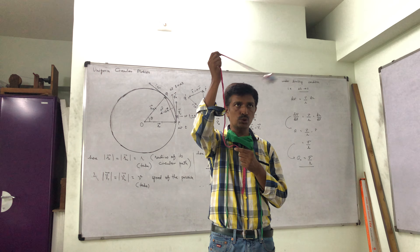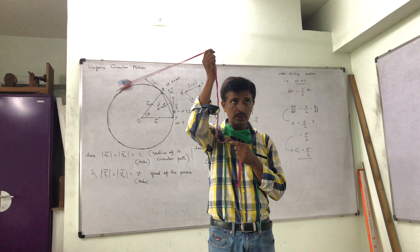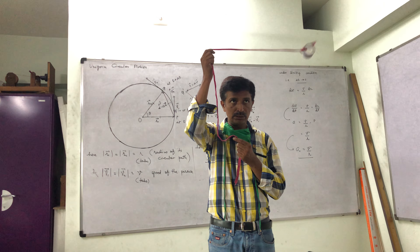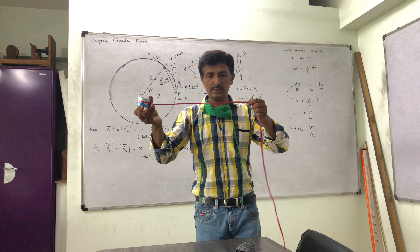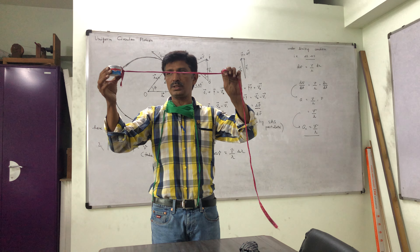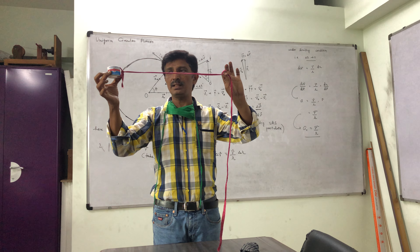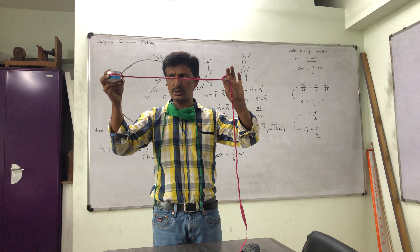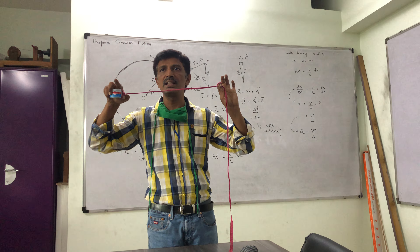If the motion of this body is on a circular path with constant speed, what about its velocity? Is it constant or not? No. Because suppose in this situation, this is the centre. At a certain moment this is its position, so its velocity is in the direction of the tangent.